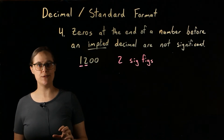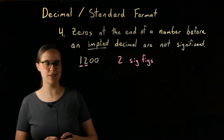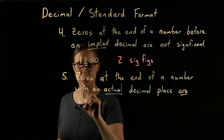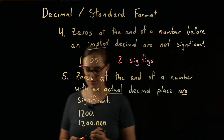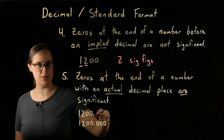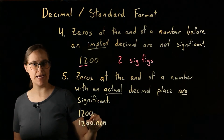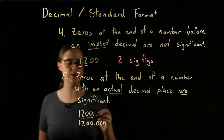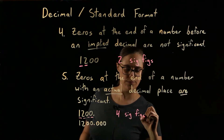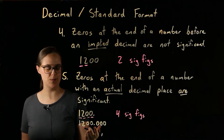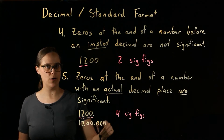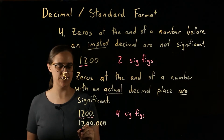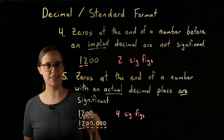In rule number 5: zeros at the end of a number with an actual decimal place are significant. So the value 1,200 with a decimal point actually written at the end — this is an actual decimal point, which means all four digits are significant, giving four significant figures. If additional zeros are appended after the decimal, all of those zeros are also significant, making all those digits significant — for example, seven significant figures.